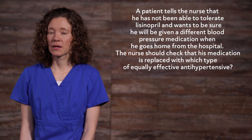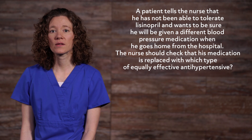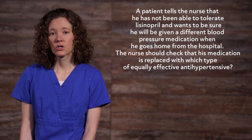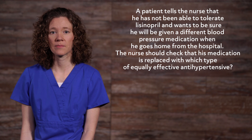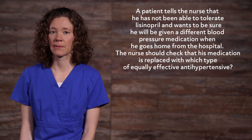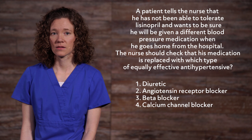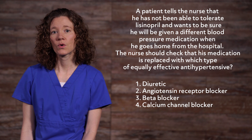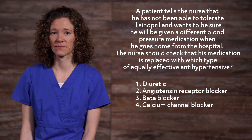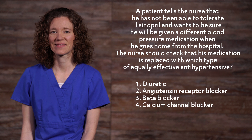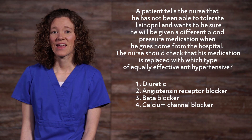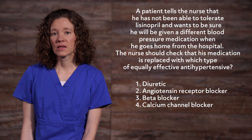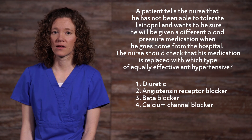A patient tells the nurse that he has not been able to tolerate lisinopril and wants to be sure he will be given a different blood pressure medication when he goes home from the hospital. The nurse should check that his medication is replaced with which type of equally effective antihypertensive? 1. Diuretic. 2. Angiotensin receptor blocker. 3. Beta blocker. 4. Calcium channel blocker. If you chose number 2, angiotensin receptor blocker, you're right. ARBs have very similar effects to ACE inhibitors without the side effects.